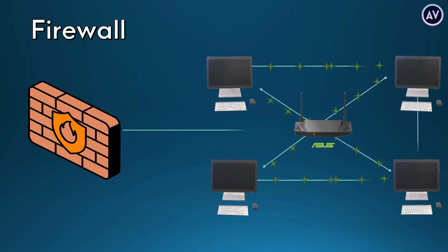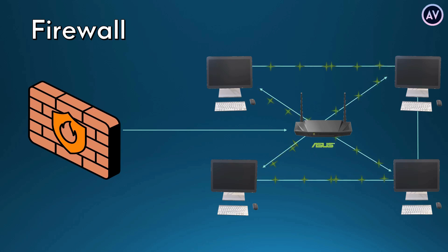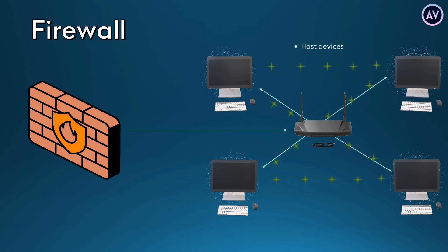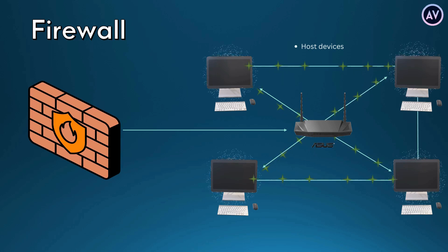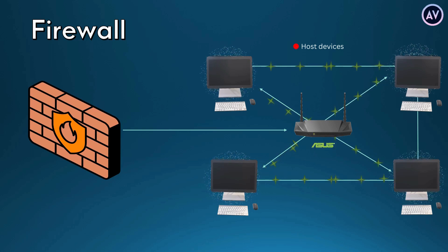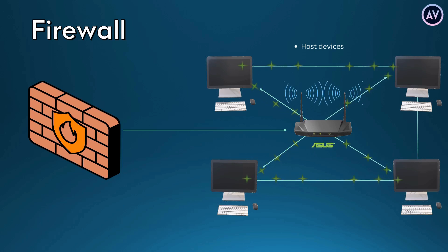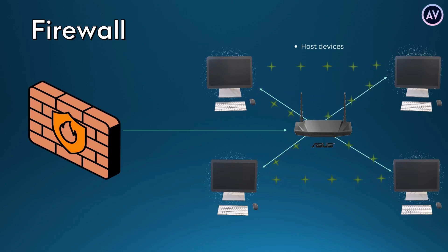Firewalls are intended to secure private networks and the endpoint devices within them, known as network hosts. Network hosts are devices that communicate with each other and with other hosts on the network. They send and receive data between internal networks as well as outbound and inbound between external networks.